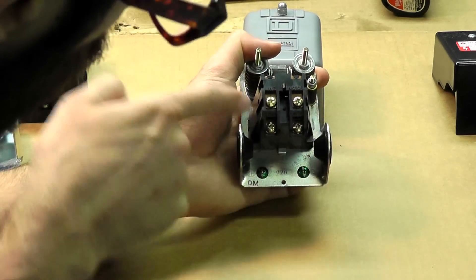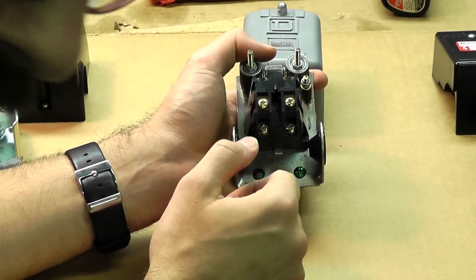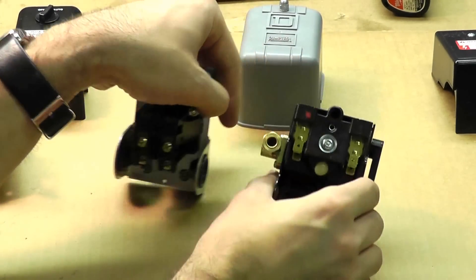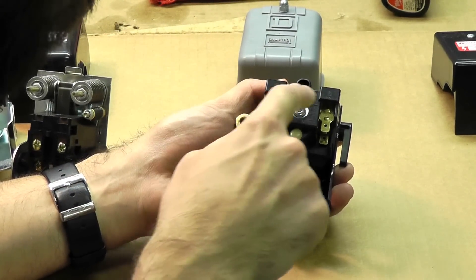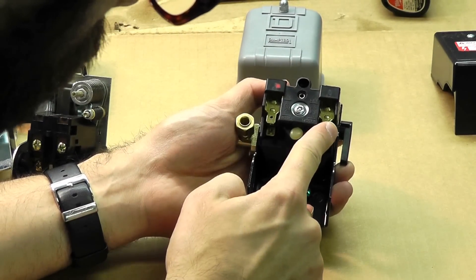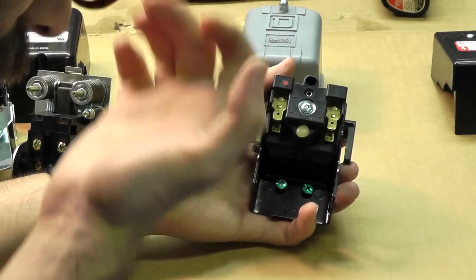This is pretty simple: black and white for your power cord on the left side, black and white from the motor on the right side. Easy as that. It's also just as easy on your Furnas or Hubbell switch: line on top and motor on the bottom.